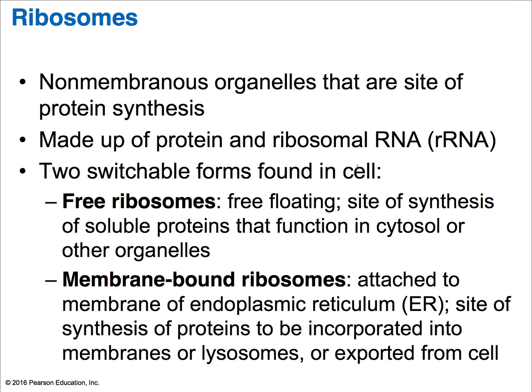Remember, you have two types of ribosomes: membrane-bound or non-membrane-bound. Membrane-bound ribosomes are found on the rough endoplasmic reticulum — the rough ER — where they produce proteins that are going to be exported out of the cell or incorporated within the plasma membrane. Free ribosomes make proteins for the cytosol or other organelles. This is a very good question to be found on an exam.